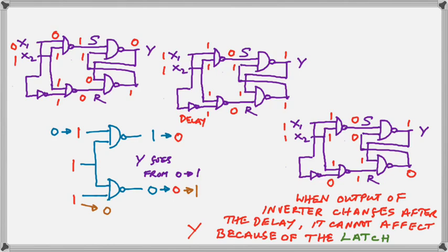Finally, we look at the situation where X1 goes from a 0 to a 1. Once again, the diagram at the top left shows the stable state with the X1 as a 0. When the X1 changes to a 1, even though the inverter has not yet processed that 1 and changed its output to a 0, the output Y has gone from 0 to 1.